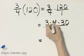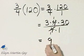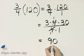Notice the common factor of 4 divides out, and I have 3 times 1 times 30, which is 90, over 1 times 1.